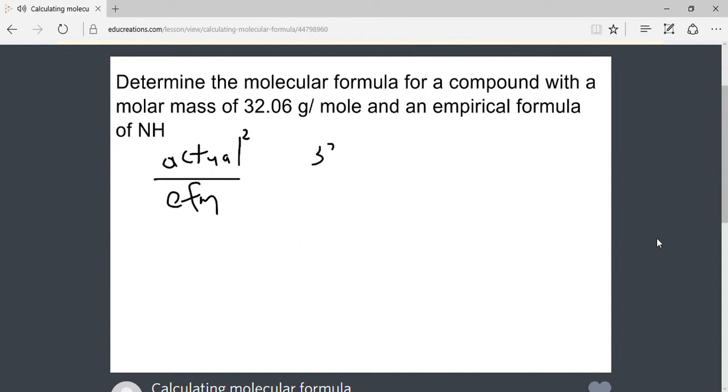Our actual molar mass is 32.06. The empirical formula mass from NH2 is 16.03 grams. Dividing the actual mass by the empirical formula mass gives us the whole number 2.